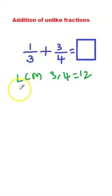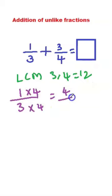Next we will change these fractions into equivalent fractions. So I will write here 1 by 3. 3 times 4 equal to 12. So we will multiply both numerator and denominator with 4. We will get 4 by 12.